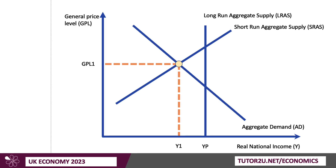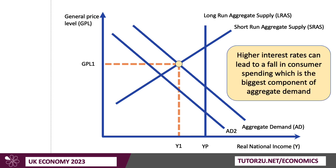Here's our ADAS analysis, showing an equilibrium initially at Y1, a little bit below the potential output level of YP. Higher interest rates can lead to a fall in consumer spending, and perhaps investment, and perhaps exports. Consumer spending is the biggest component of aggregate demand, so in theory this could cause AD to shift to AD2. As a result, there would be a contraction of real output and downward pressure on the general price level.